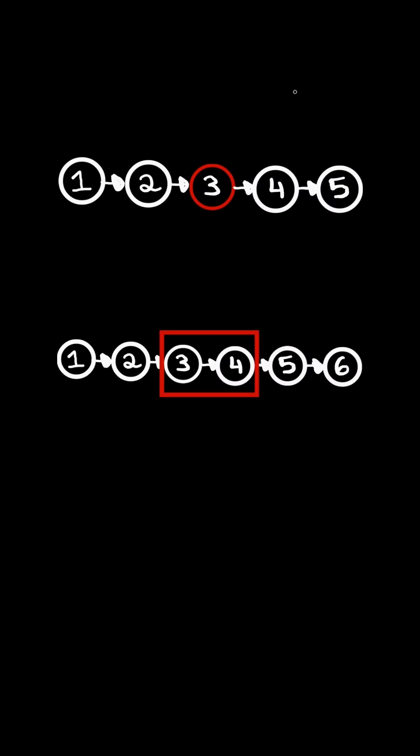Consider this example. If there are two middle nodes, then return the second middle node. We will solve this in O(n) time, where n is the length of the linked list.